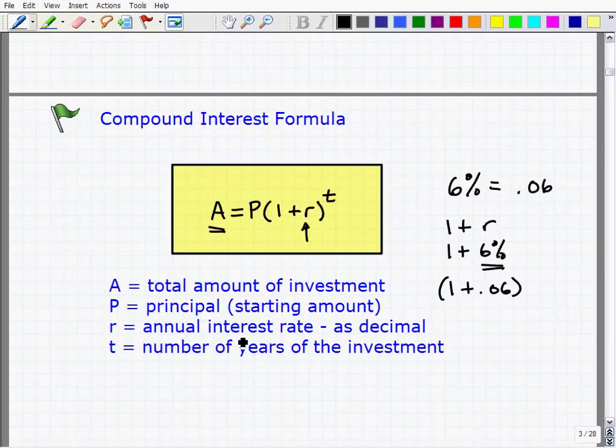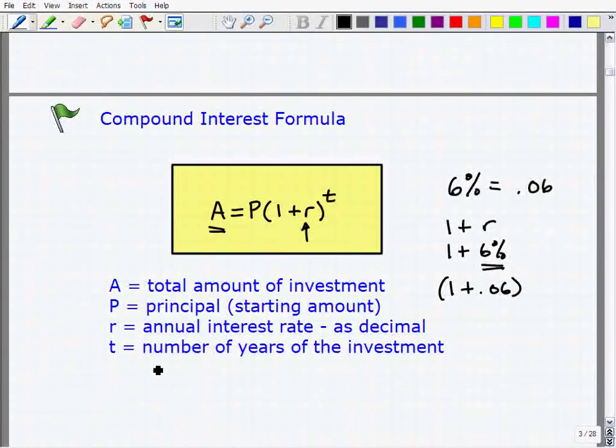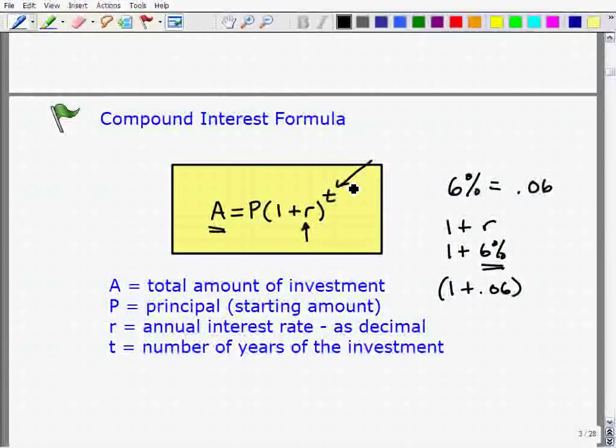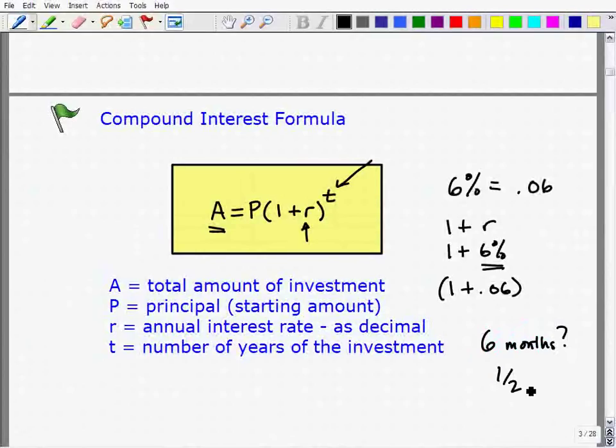So r is your interest rate as a decimal, and t is the number of years you decide to leave the money in a particular savings account. That's the number of years of your investment. And it has to be expressed in years. So if you decide to invest for only 6 months, that's one half of a year, so that's what your t amount would be.